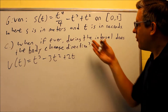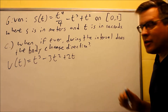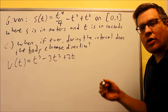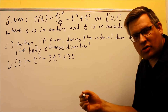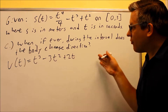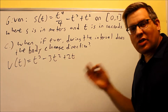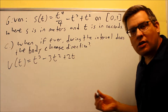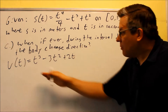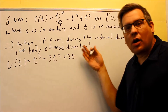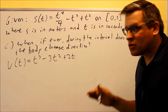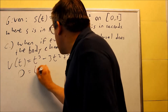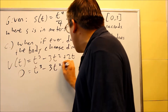For part C, it's asking us: when, if ever, during the interval does the body change direction? If something changes direction, it has to first come to a stop and then change direction. So I need to find where the object actually stops, because at those times it could be changing direction. Where it stops means velocity equals zero, so I'm going to set the velocity function equal to zero.